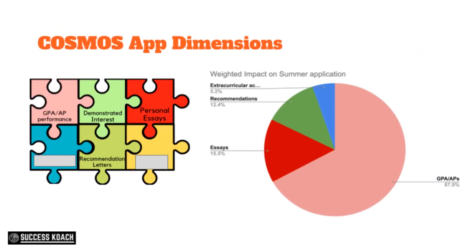Moving into the actual application dimensions they look at: I typically have six quadrants to my jigsaw puzzle about college applications. GPA, demonstrated interest, personal essays, and recommendation letters are still very important for UC Cosmos or any other summer program. Extracurricular activities and SAT/ACT scores don't matter here. Within the things that do matter, your GPA, APs, IBs, and any concurrent programs that show interest in that cluster are super critical — almost more than 65%, in my opinion.